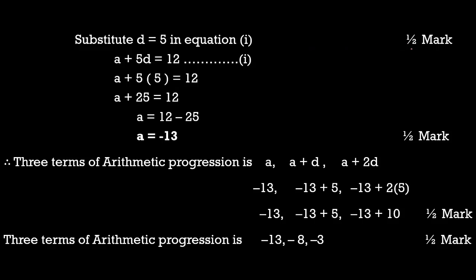You get half a mark for finding d = 5. Now substitute d = 5 into equation 1: a + 5d = 12, so a + 5(5) = 12, a + 25 = 12, therefore a = 12 − 25 = −13. You get half a mark for finding a = −13.